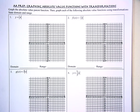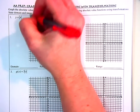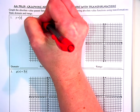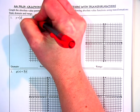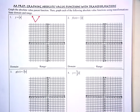In problem one, we're looking at the parent function for absolute value — it's the most basic format we will ever see it in. Absolute value is this beautiful V-shaped function. It's like two linear functions joining together at the origin, one with a slope of positive one and the other with a slope of negative one.